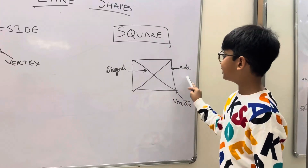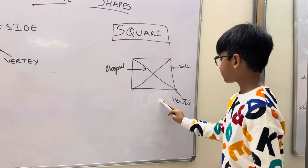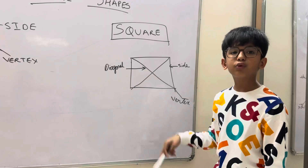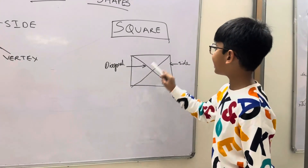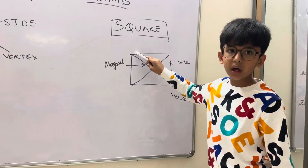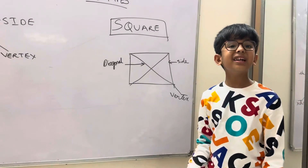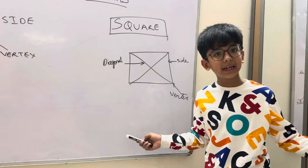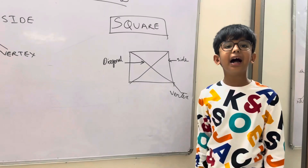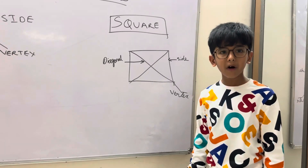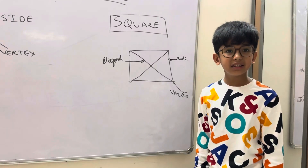A square has four sides and four vertices. All sides are equal. Some examples of square are a rubber board and handkerchief.